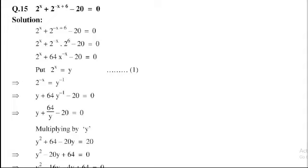Put 2 power x is equal to y. So, 2 power minus x is equal to y power minus 1. So, by putting the values, y plus 64 y power minus 1 minus 20 is equal to 0.